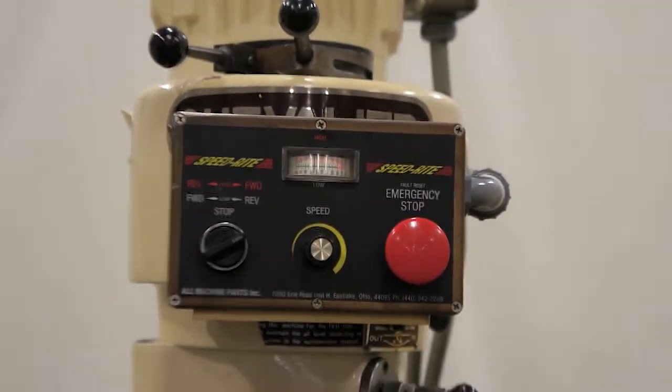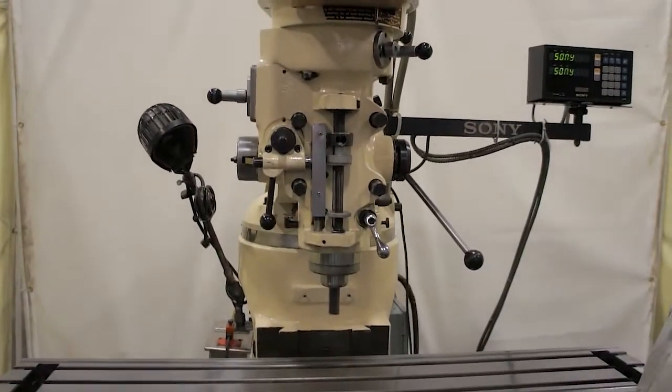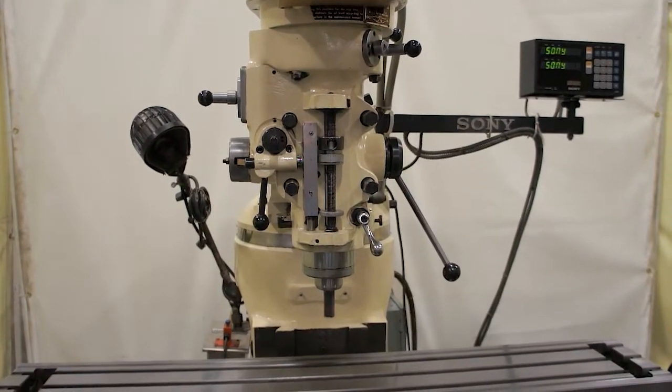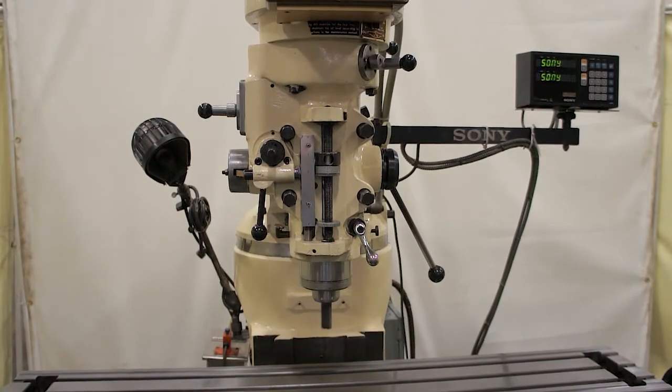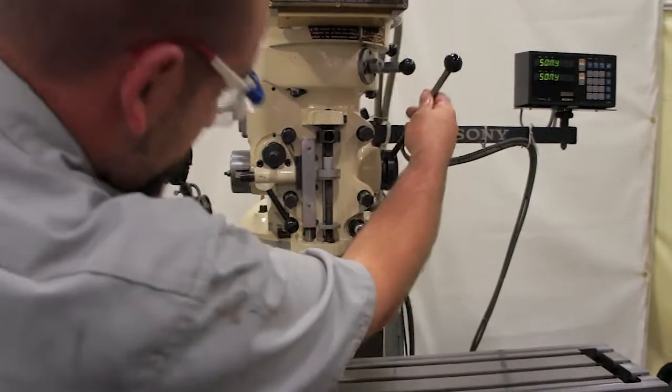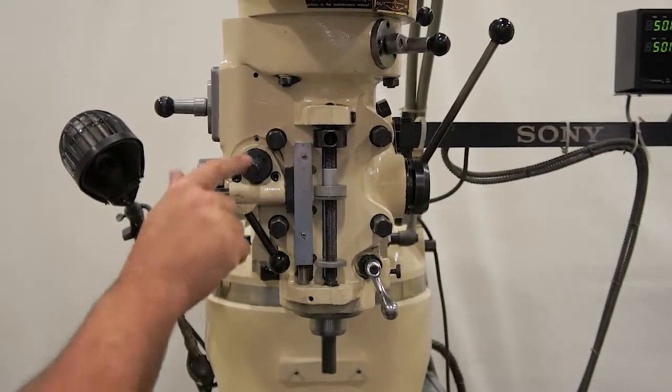This unit also knocks off in the down stroke. It also knocks off in low stroke. Note the plunger to reverse the feed.